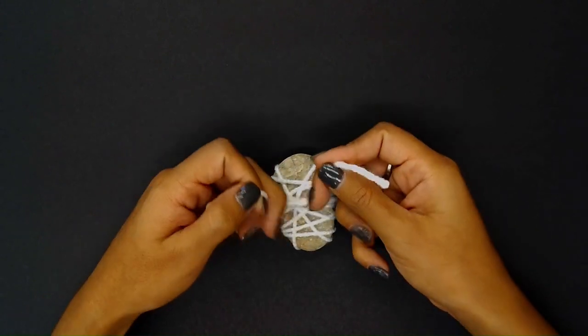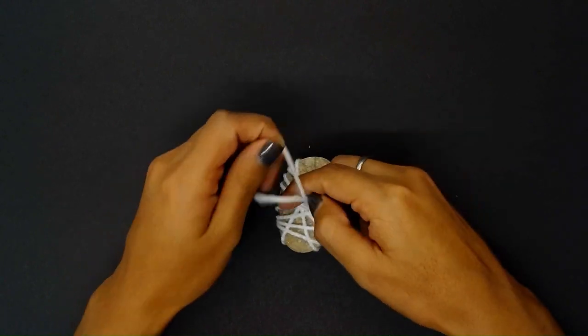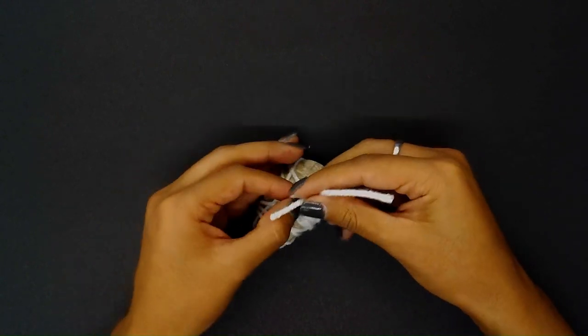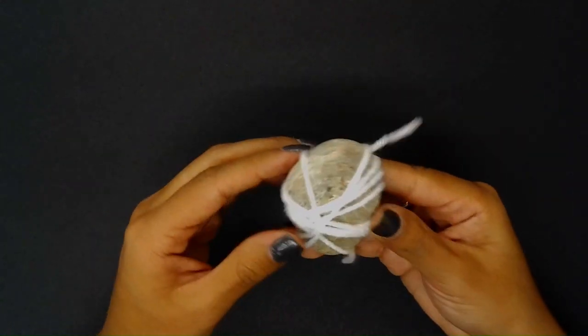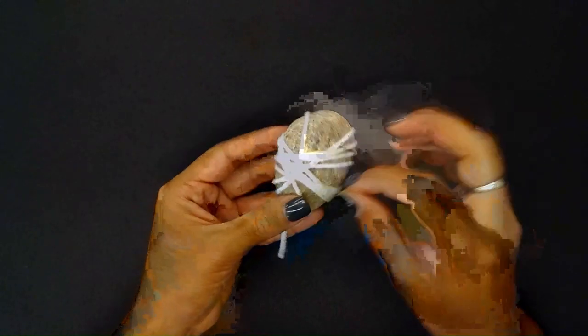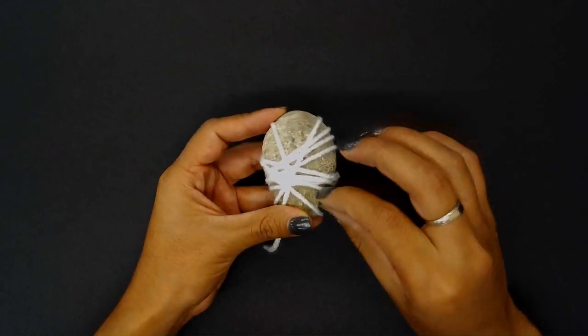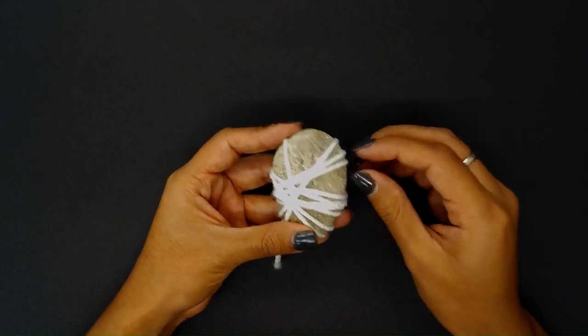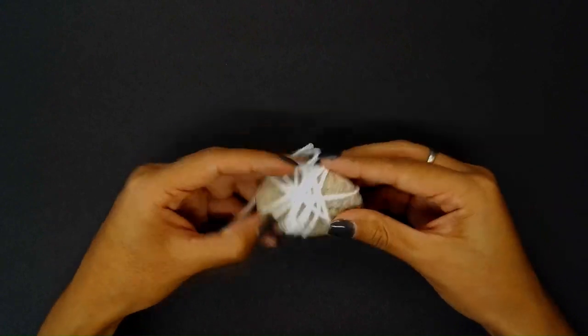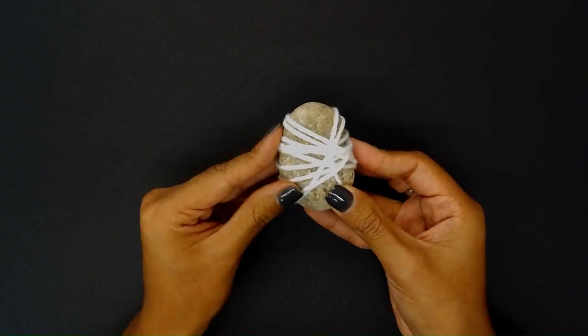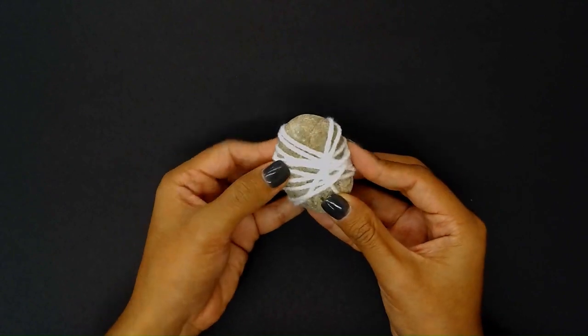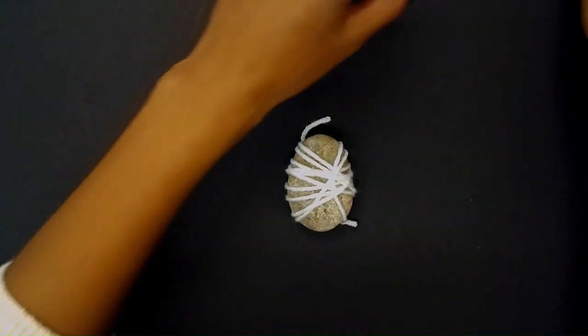We're going to flip our rock over. You can move around the yarn to get your mummy exactly how you like. And our next step is to take our googly eyes.